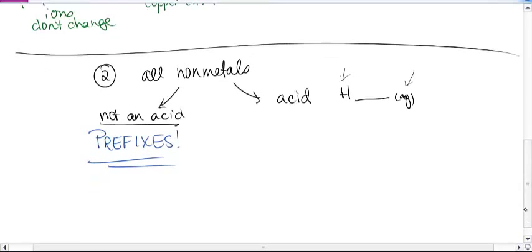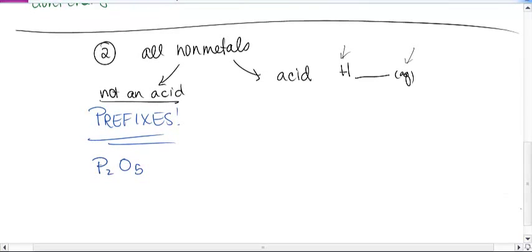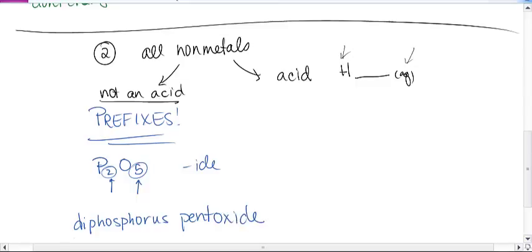If it's an acid, we follow different rules, as I'm sure you discovered. So I'm just going to do one example here. If I need to name this, I use a prefix to tell me how many phosphorus and how many oxygen, and then I change the ending to -ide. So this becomes diphosphorus, two, five is pent, and I change the ending to -ide, so it becomes pentoxide.